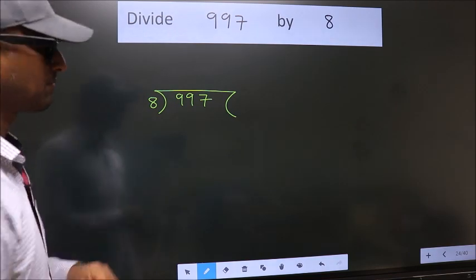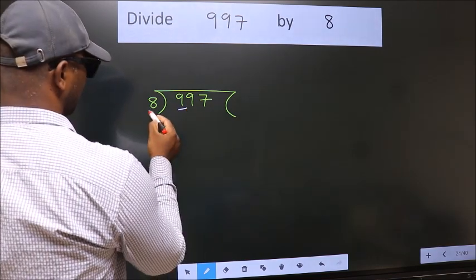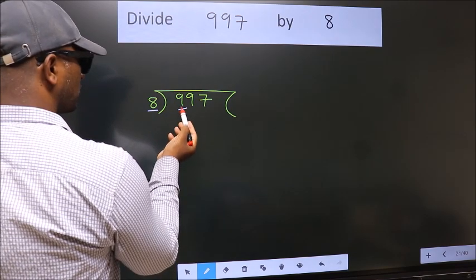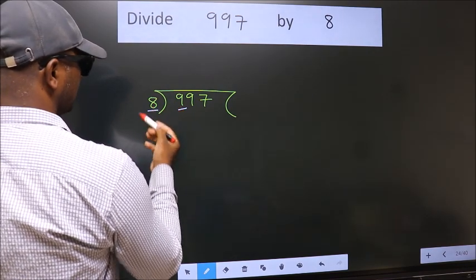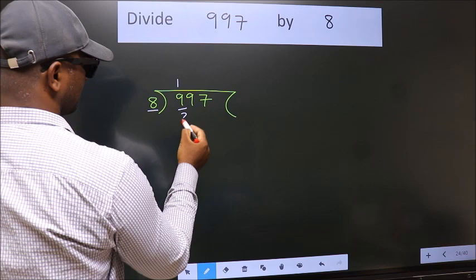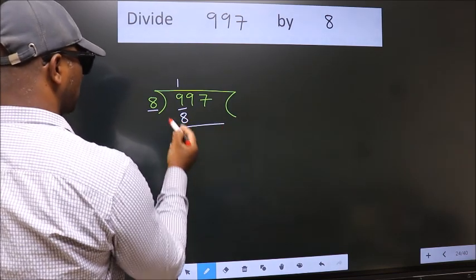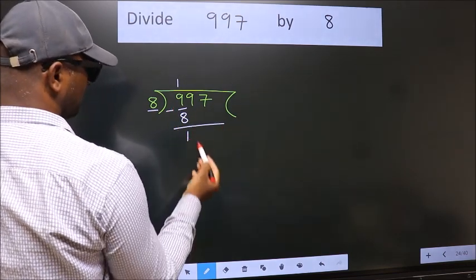Next. Here we have 9, here 8. A number close to 9 in the 8 table is 8 once, which is 8. Now we subtract and get 1.